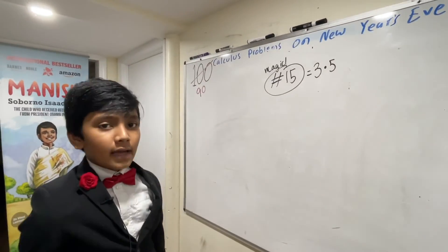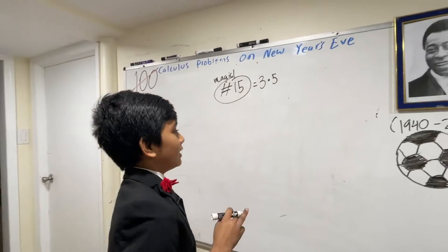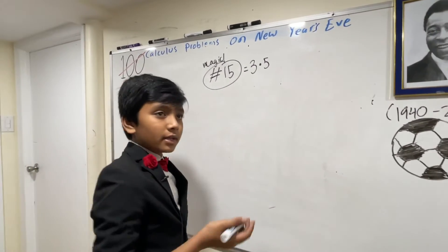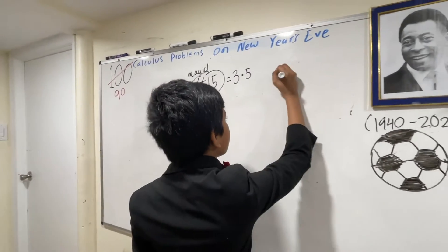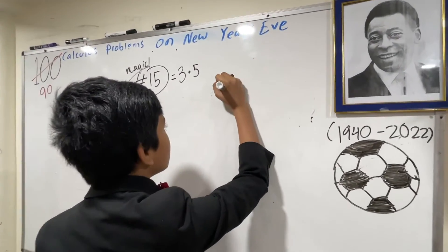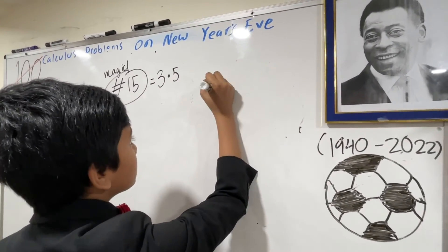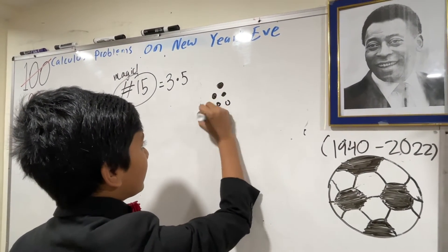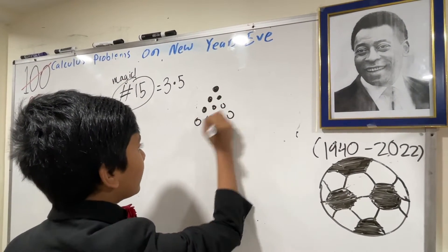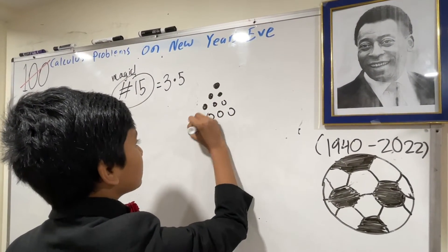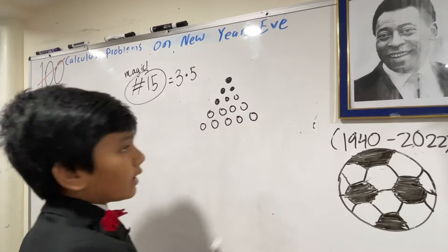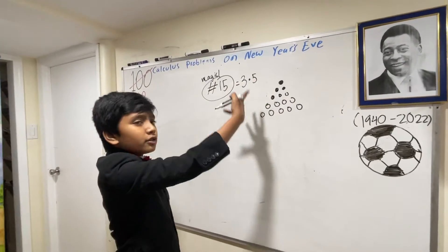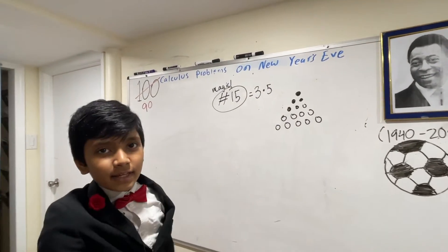What does triangular mean? It means that if we take one, two, three, four, and five and arrange them in a triangle-like formation, the total number of circles in that arrangement is fifteen.